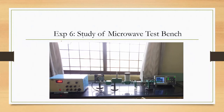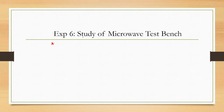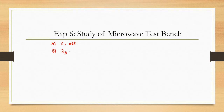Hello everyone. Today we will understand experiment number six in our communication laboratory, which is the study of microwave test bench. This experiment has two parts: Part A and Part B. The aim of Part A is to determine frequency and measure attenuation, whereas in Part B we will be determining lambda G, that is guide wavelength, and Voltage Standing Wave Ratio, VSWR.